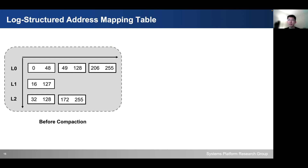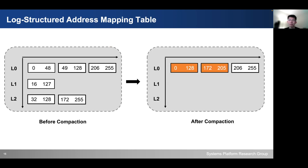As the mapping table grows, there could be redundant index entries, so we perform periodical compaction of the mapping table. Before compaction, there might be six index segments, and after removing the redundant entries, we only result in three remaining index segments, which helps us save more memory.